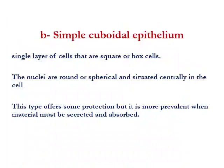The other type of simple epithelium is simple cuboidal epithelial tissue. When we say simple cuboidal epithelial tissue, that means one layer of cube-shaped cells with a rounded nucleus situated in the center of the cell. This type of tissue offers some protection, but it is more prevalent when material must be secreted and absorbed. For example, in glands such as thyroid and pancreas, and lining the kidney tubules.